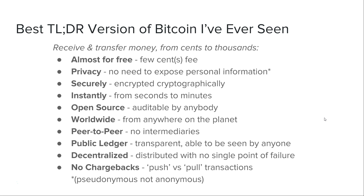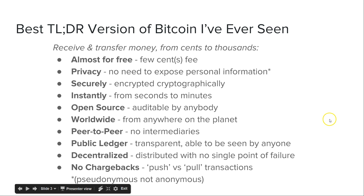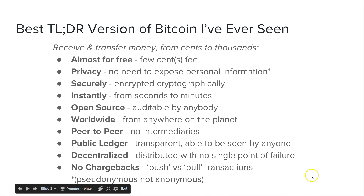When I think about Bitcoin, I really think about why I'm in Bitcoin at all when I'm thinking about fundamentals. This is the best sort of explanation — it has some flaws, but overall it's basically free. It's private, it's secure, it's almost instant, it's open source, it's worldwide, peer-to-peer, it's public — anybody can view the ledger. Decentralized, distributed, no chargebacks, which means lower incidence of fraud, if not zero. And lastly, it's pseudonymous, not anonymous, which is where the personal information piece kind of gets flimsy.